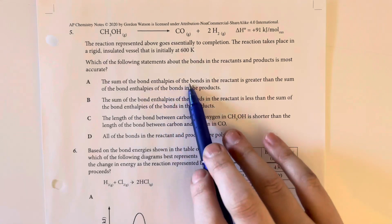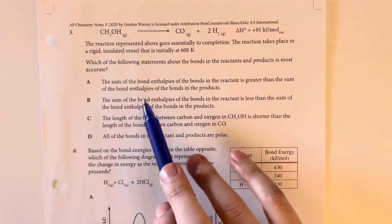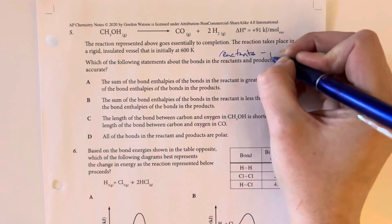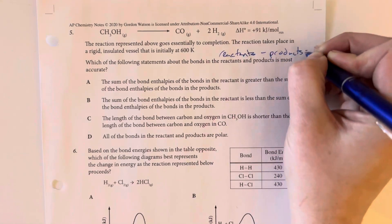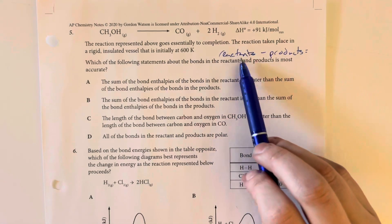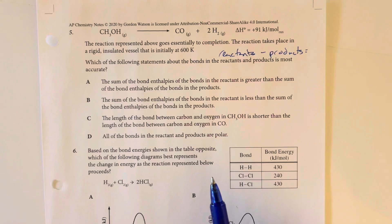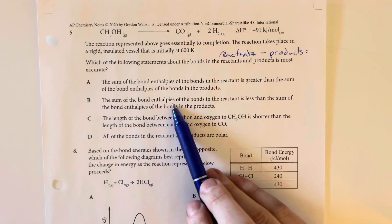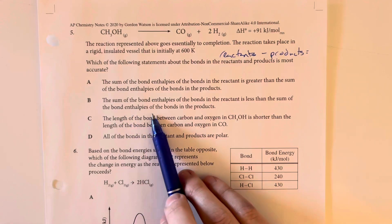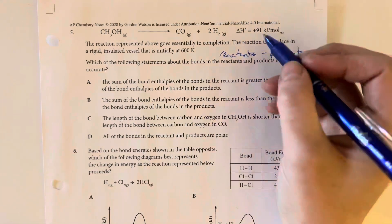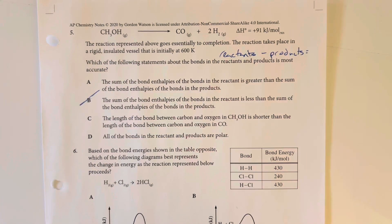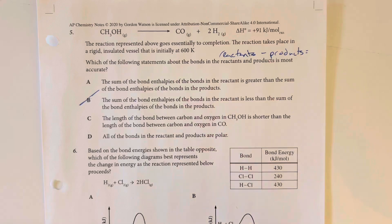The sum of the bond enthalpies of the bonds in the reactants are greater than the sum enthalpies of the bonds in the products. Remember that we have reactants minus products. So that sounds good so far. Let's see if anything else is better. The sum of the bond enthalpies of the bonds in the reactant is less than the sum of the enthalpies of the bonds in the products. That is the inverse. That would be if delta H was negative. So no. The length of the bond between carbon and oxygen is shorter than the bond length between carbon and oxygen in carbon monoxide. We don't actually have any of the enthalpies here.